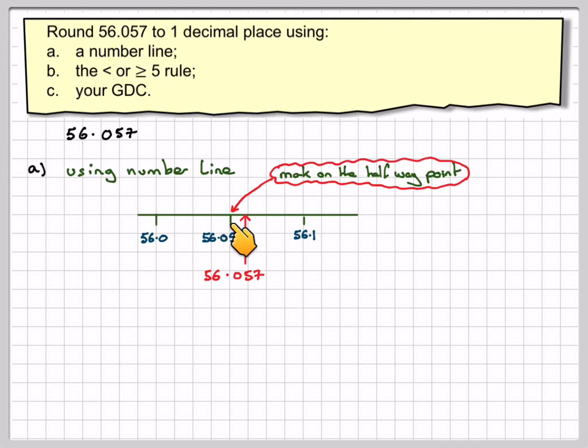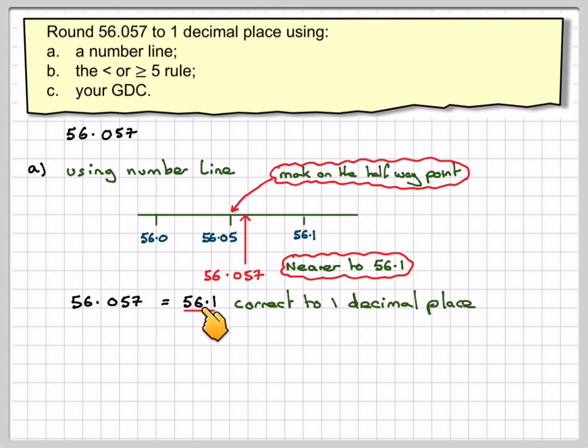If it's exactly halfway, we always go to the upper one. So it is nearer to 56.1. Therefore, 56.057 equals 56.1 correct to one decimal place.